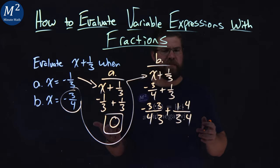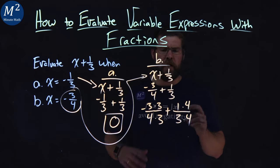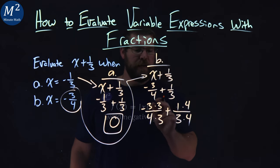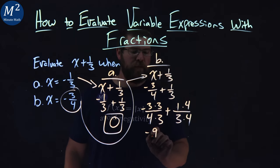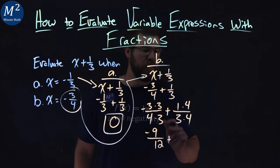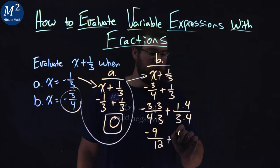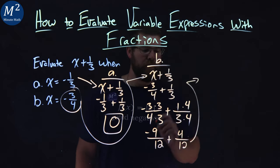From there, we simplify some. We have 3 times 3 is 9, so we have negative, put it up top, negative 9 over 12, plus 1 times 4 is 4, over 3 times 4 is 12.